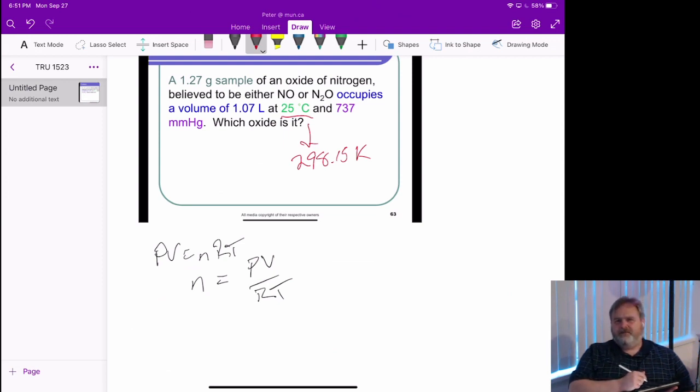That 737 millimeters of mercury is going to cause us a few problems, possibly in terms of the gas constant R. So let's think about that. I've got a pressure of 737 millimeters of mercury, but I also know that one atmosphere is 760 millimeters of mercury.